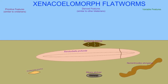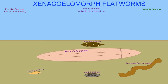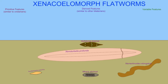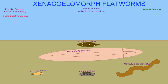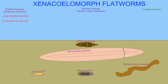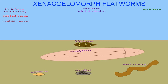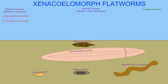They have primitive traits which are similar to cnidarians in that they have a single opening for the digestive system — an opening which serves as both the mouth and the anus. They do not have any excretory structures like nephridia that higher bilaterians will share.